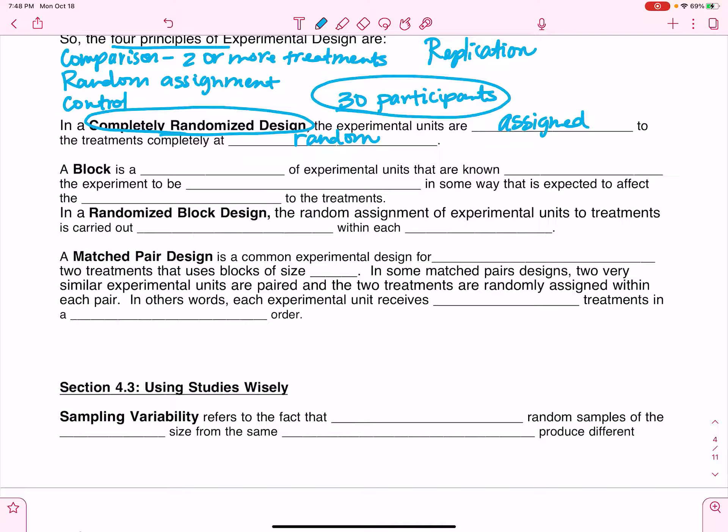Now, something that's different is when I have a block. A block is a specific group of experimental units that are known before the experiment to be similar in some way that is expected to affect the response. Let's say, let's go back to my example about a new study program. If I am conducting this new study program with some of my students and I think that their GPA is going to affect how well they respond to this study program, I might want to block them on GPA.